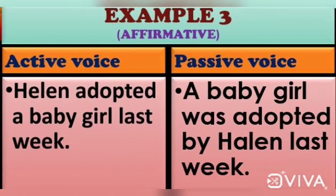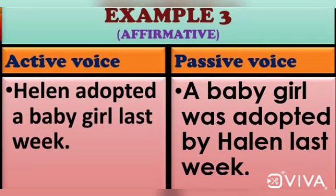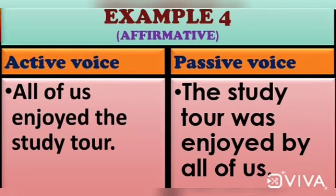Example three: 'Helen adopted a baby girl last week.' Helen is the subject. She adopted what? A baby girl — that is the object. Therefore, the object 'a baby girl' is taken to the beginning of the sentence: 'A baby girl was adopted by Helen last week.'